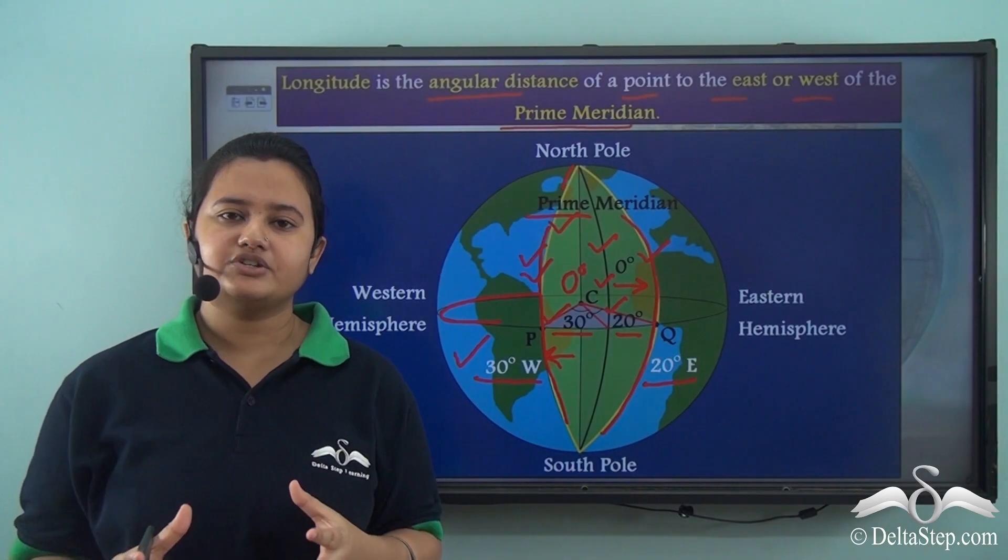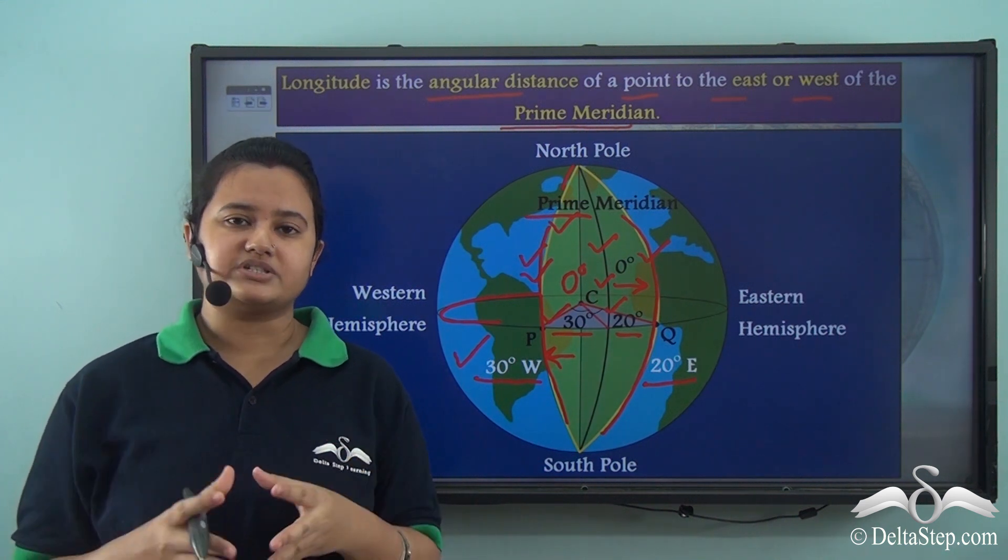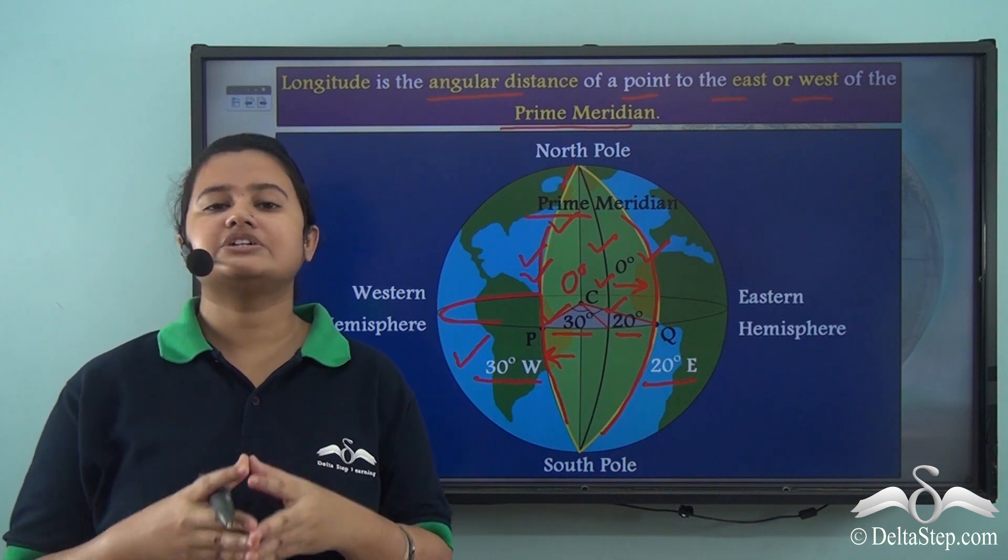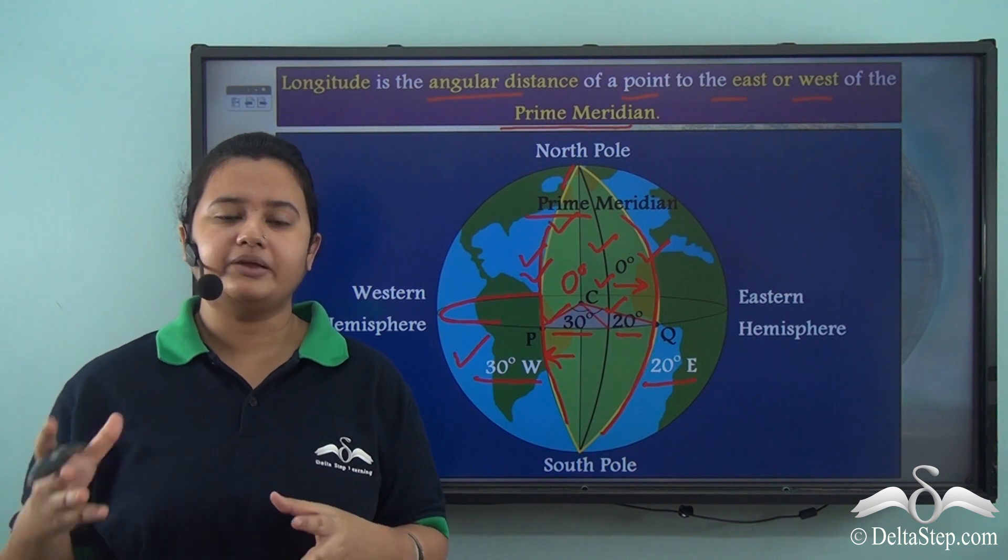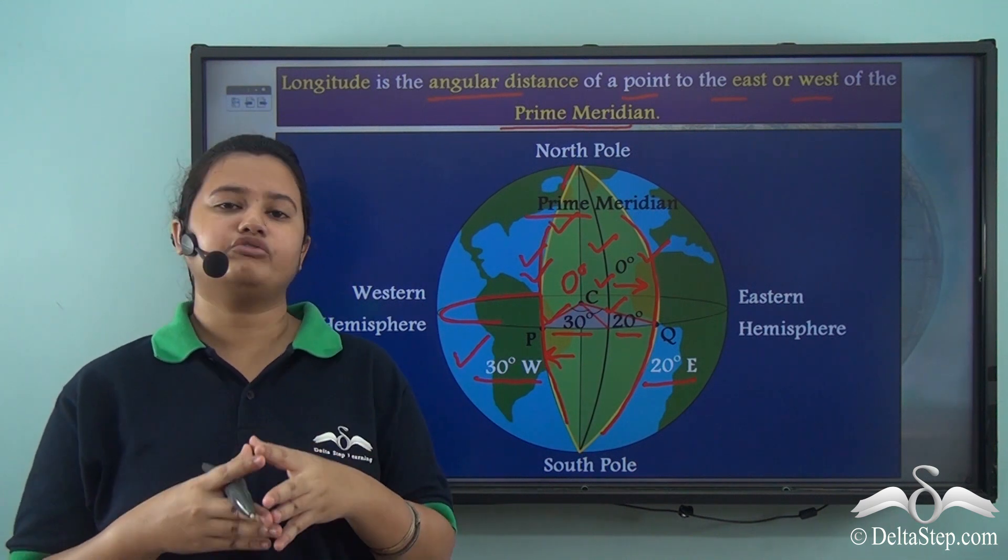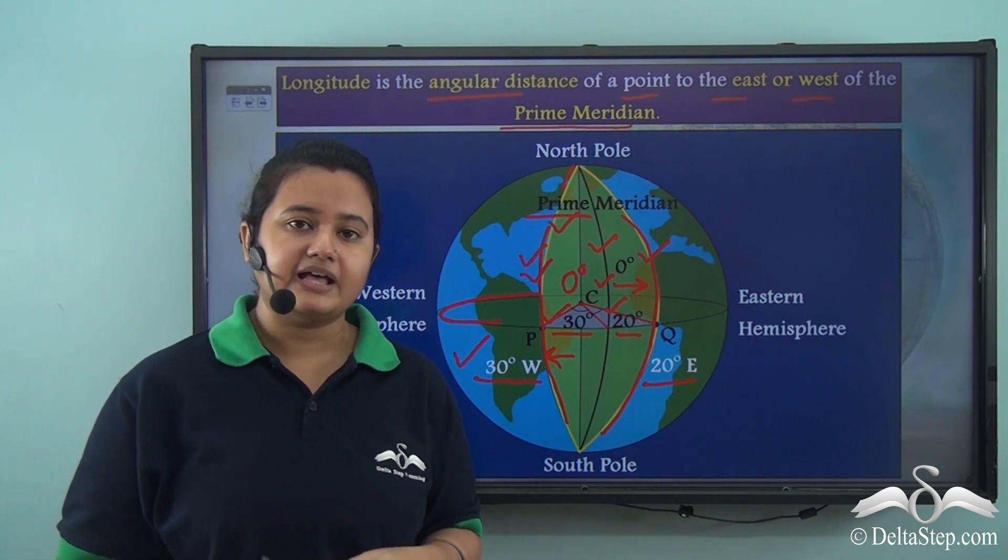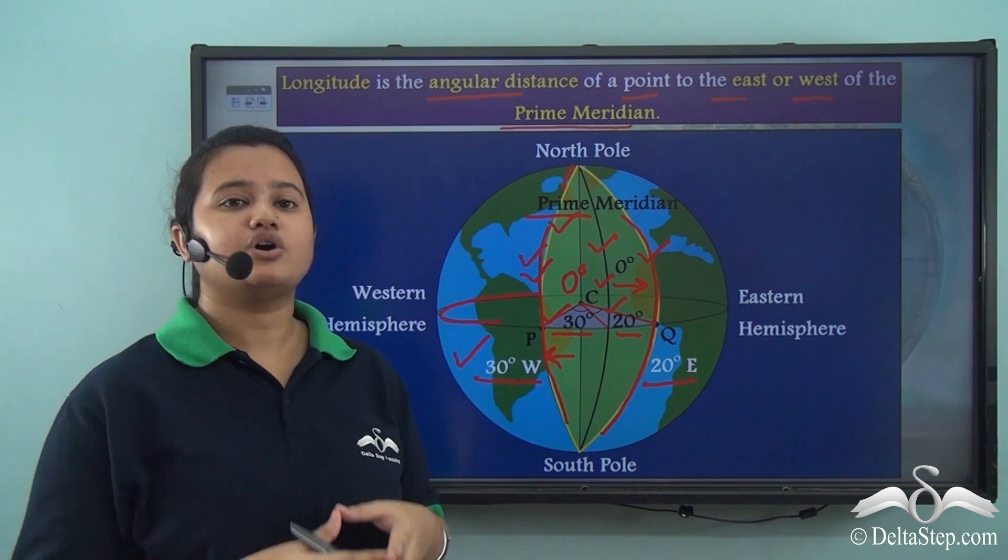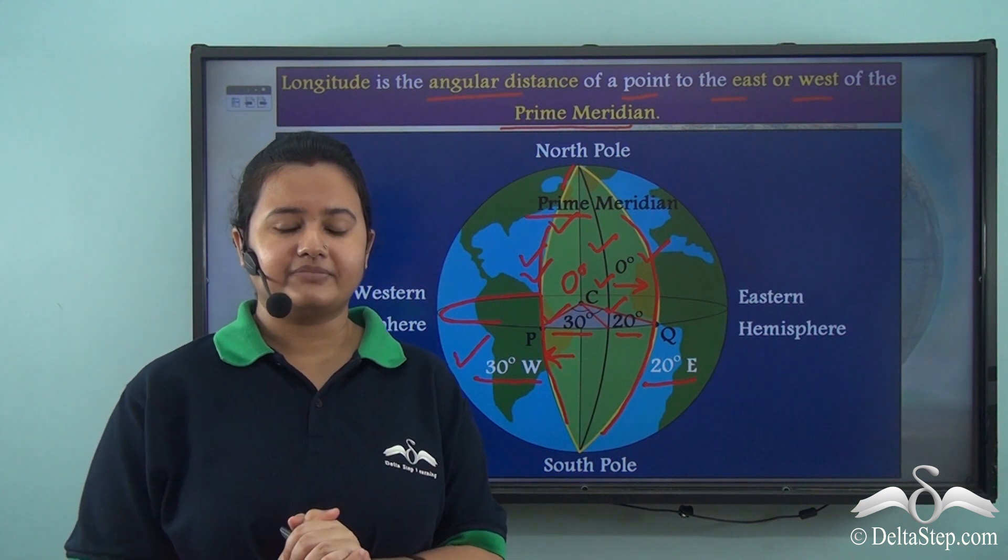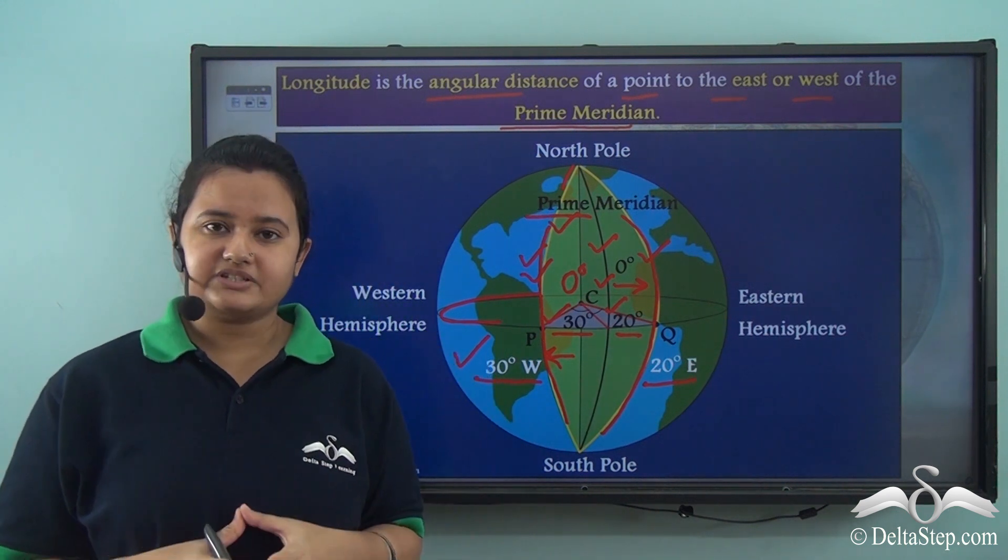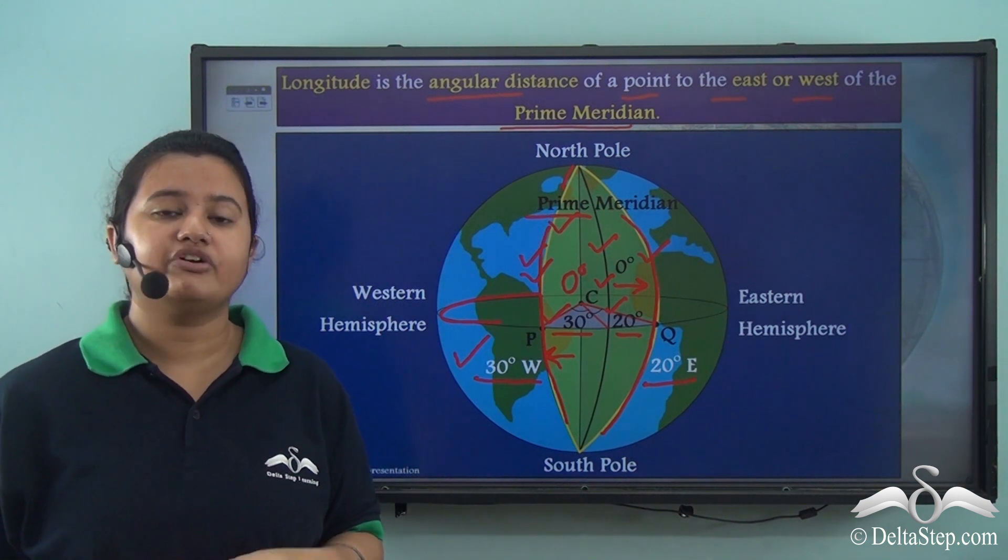In today's video we understood the concept of longitudes. We understood that longitudes are imaginary vertical lines drawn on a globe. Then we learnt about the prime meridian which is an important line of longitude. Then we understood that longitudes can also be defined as the angular distance of a point lying to the east or west of the prime meridian. In our next video we will understand different characteristics of longitudes.